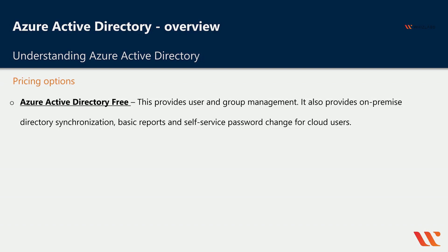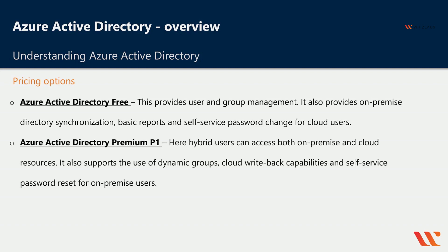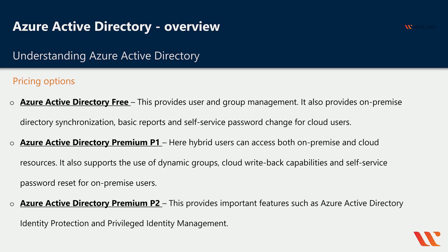Azure Active Directory Premium P1 allows hybrid users to access both on-premise and cloud resources. It also supports dynamic groups, cloud writeback capabilities, and self-service password reset for on-premise users. Azure Active Directory Premium P2 provides important features such as Azure AD Identity Protection and Privileged Identity Management.